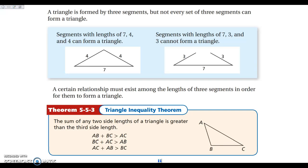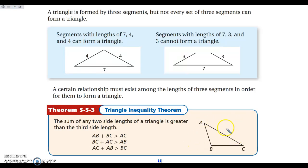Next we'll look at whether or not three lengths can actually form a triangle. Not every set of three lengths can. For example, 4, 4, and 7 can make a triangle, but 3, 3, and 7 cannot — those sides will never close up and touch. The rule is that any two sides must add up to be greater than the third side.